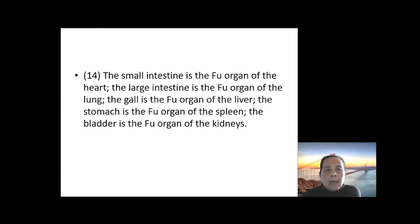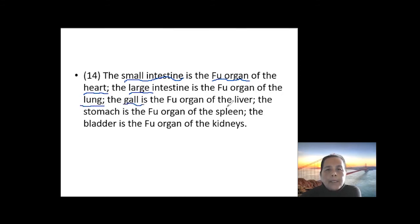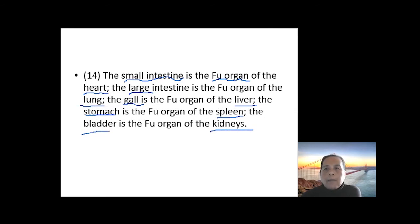Then talking about the small intestine — the small intestine is a fu organ — and its relationship with the heart. We are talking about the zang-fu relationship here: the large intestine has a relationship with the lung; the gallbladder has a relationship with the liver; the stomach has a relationship with the spleen; and the bladder has a relationship with the kidney.